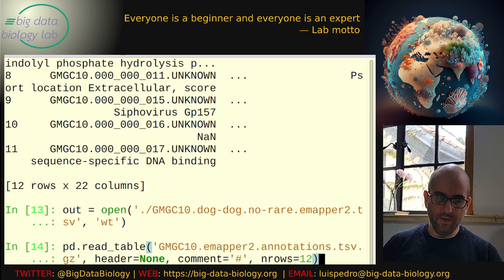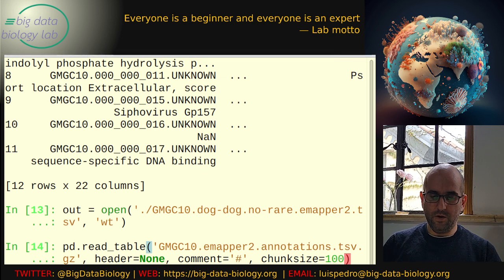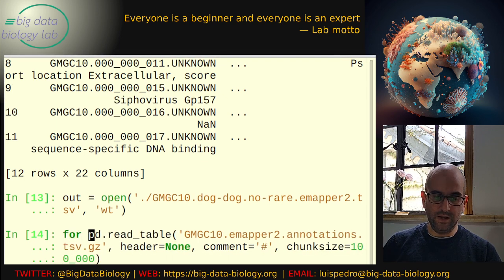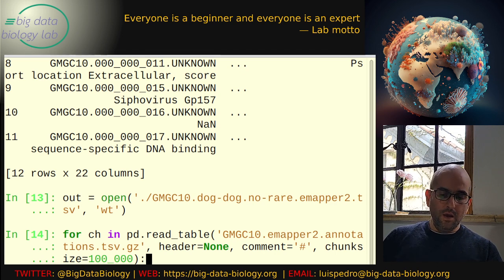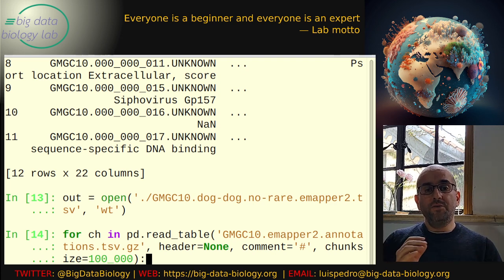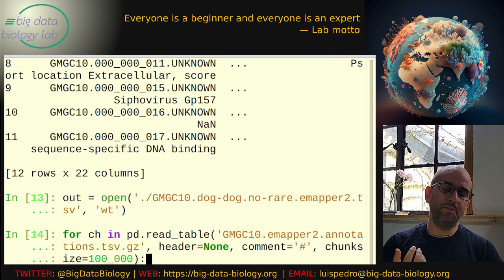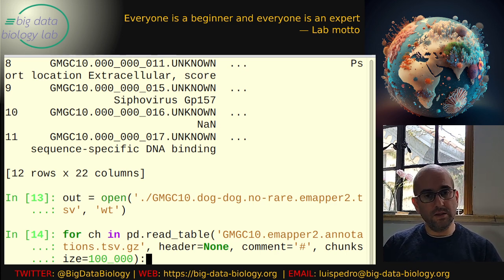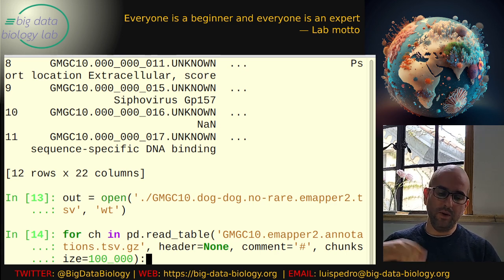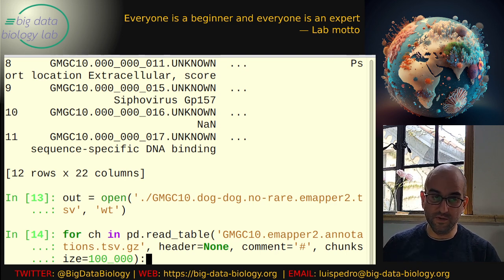I'll open it in write mode, and now I'm going to use a chunk_size of 100,000. What chunk_size does is, instead of loading the whole file at once, it loads the file chunk by chunk. The exact size of the chunk is really irrelevant as long as it's large enough to take advantage of economies of scale in computation, while still fitting in memory. Normally any number between 10,000 and the low millions fulfills this criteria quite well.